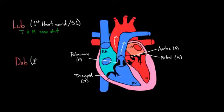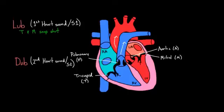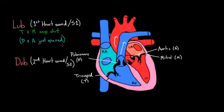The dub is called the second heart sound, or S2. You'll hear S1 when the tricuspid and mitral valves snap shut. At the same time, the pulmonic valve and the aortic valve just opened — so when those valves snap shut, the others open. The noise you're hearing is actually from the tricuspid and mitral valves closing.